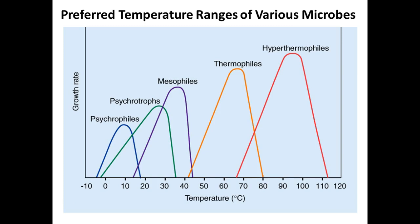If you're immunocompromised, a listeria infection can progress to the brain and cause meningitis. Thermophiles live in compost heaps and hot springs — we're too cold for them. Hyperthermophiles live at hydrothermal vents on the ocean floor.